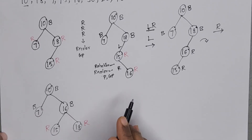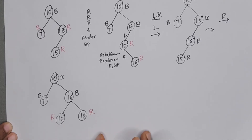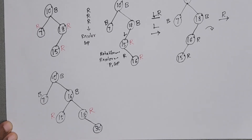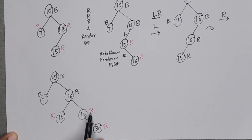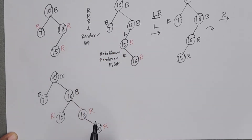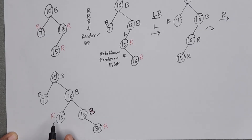After 16, the next element is 30. Since 30 is greater than 10, 16, and 18, we insert 30 on the right side of 18, colored red. Again there is a red-red conflict. New node is red, parent is red, and sibling is also red. So we recolor: make parent 30 black and sibling 15 black.